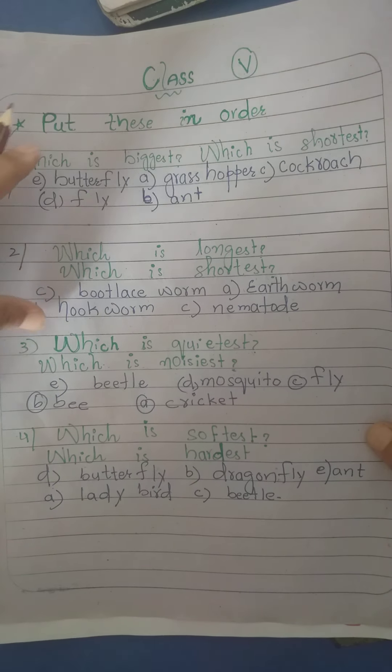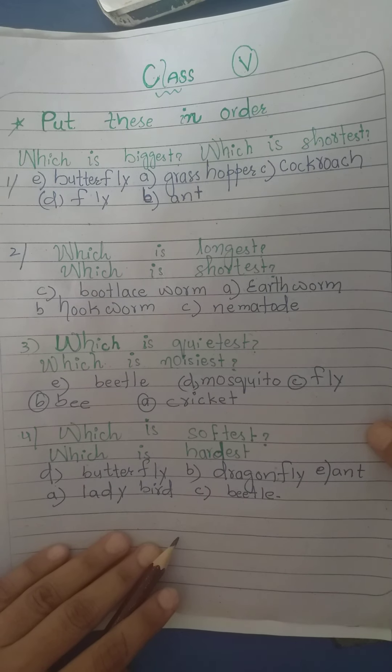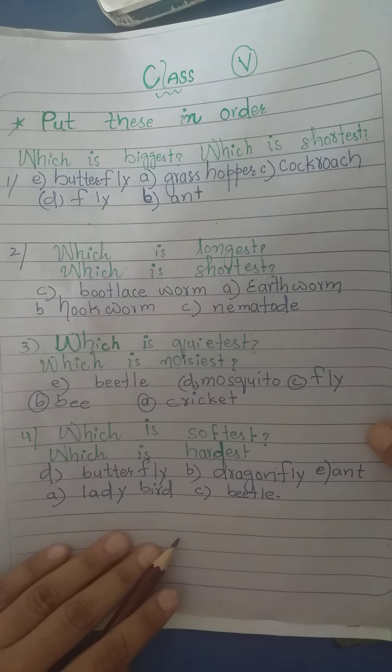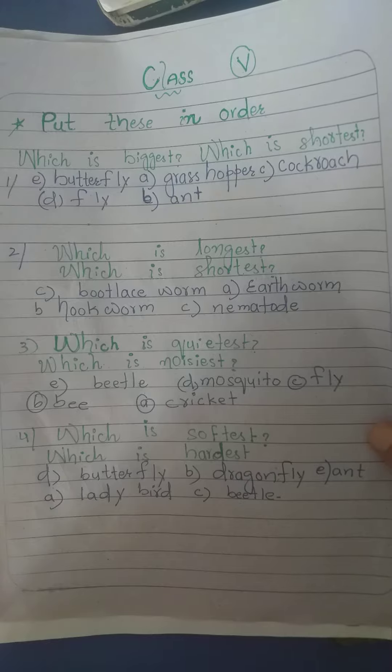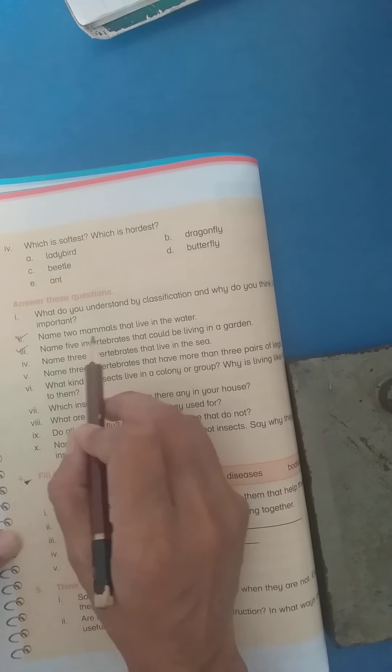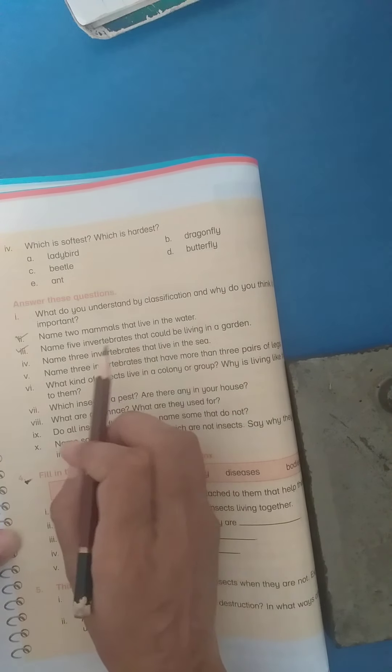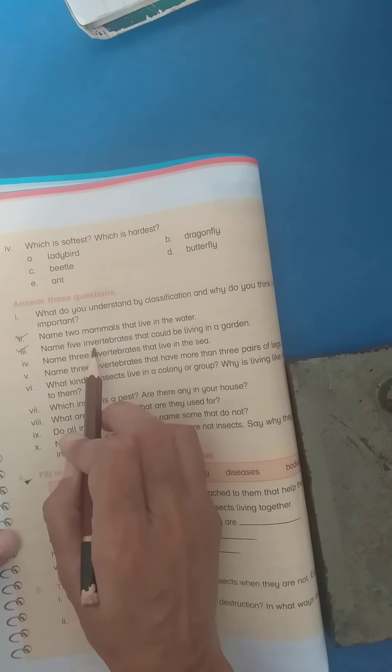Now you have to do this all in your rough copy. Dear students, now your homework is, you have to solve these questions. Number 2 question: name 2 mammals that live in water. Number 3: name 5 invertebrates that could be living in the garden. Living invertebrates are mostly insects, so you have to do this all in insects.